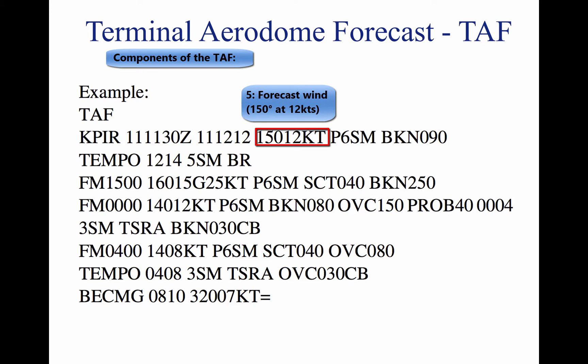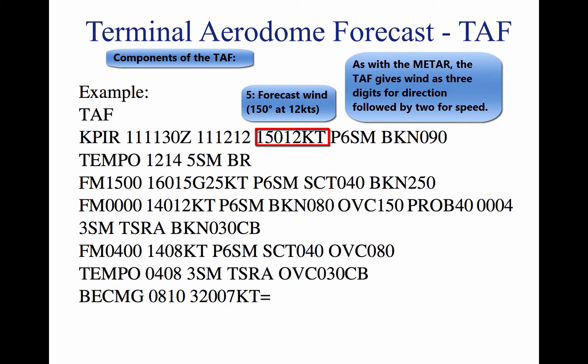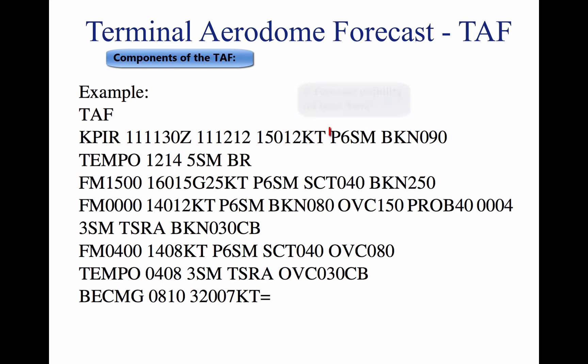5. Forecast wind: 15012KT. The wind direction and speed forecast are given in a five-digit number group. The first three digits indicate the direction of the wind in reference to true north. The last two digits state the wind speed in knots, as denoted by the letters KT. 6. Forecast visibility: P6SM, given in statute miles, and may be in whole numbers or fractions. If the forecast is greater than six miles, it will be coded as P6SM.